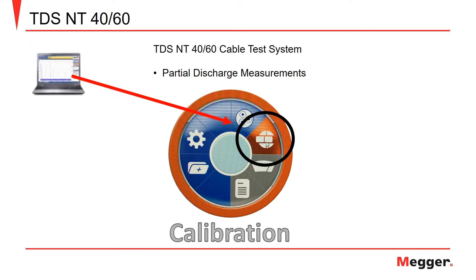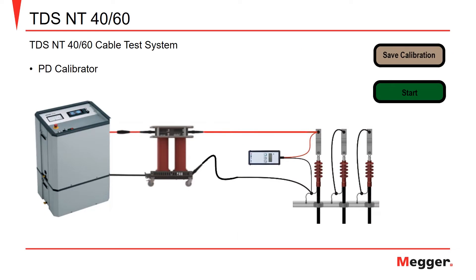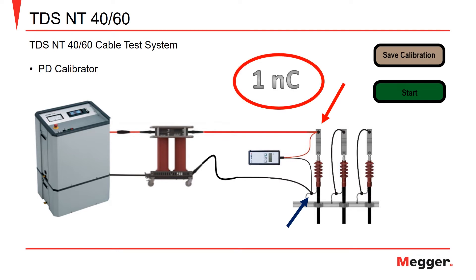Select the Calibration icon. Then connect the partial discharge calibrator to the main conductor of the cable and the exposed concentric neutral. Use the calibrator to inject a discharge signal of one nanocoulomb. Select the Start icon on the software. Once the calibration is complete, save the calibration.